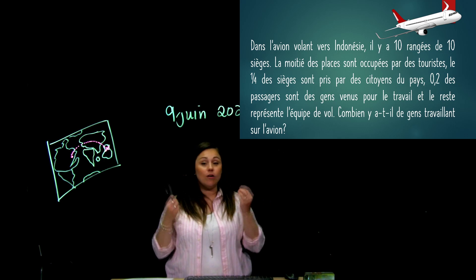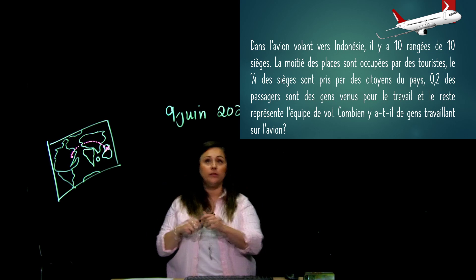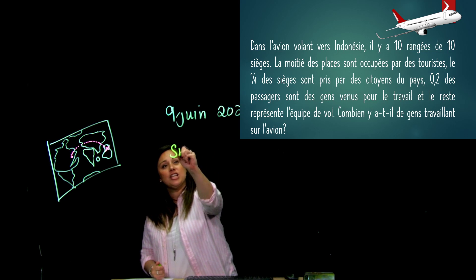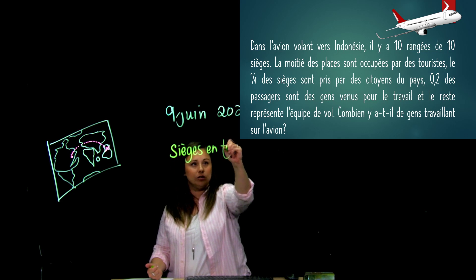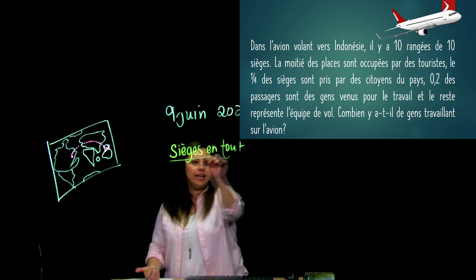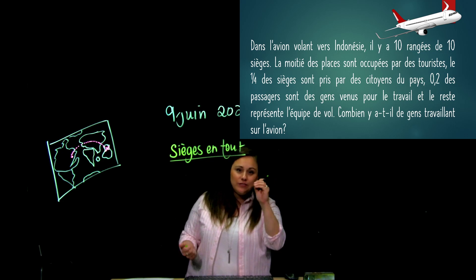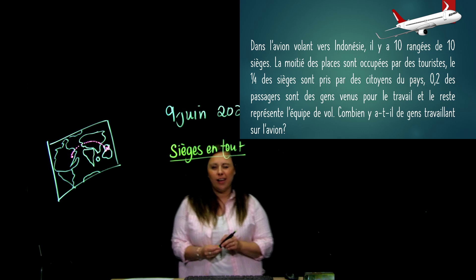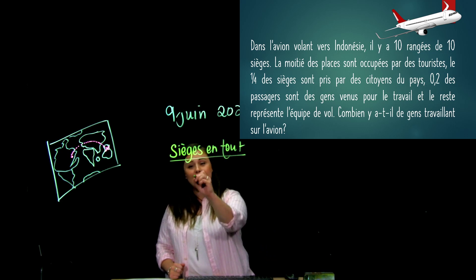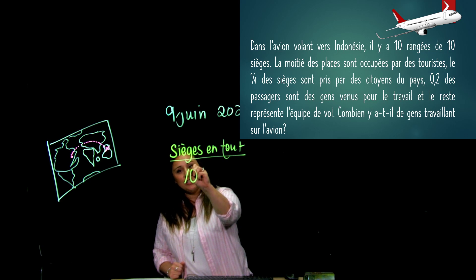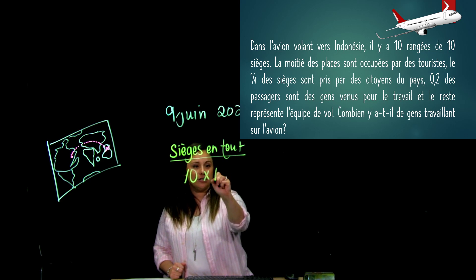Alors, voici, dans l'avion volant vers l'Indonésie, il y a 10 rangées de 10 sièges. Ça, c'est la première information. La moitié des places sont occupées par des touristes. Le 1,4 des sièges sont pris par des citoyens qui viennent du pays. 0,2, alors deux dixièmes des passagers sont des gens venus pour le travail. Et le reste représente l'équipe de vol. Combien y a-t-il de gens travaillant sur l'avion?